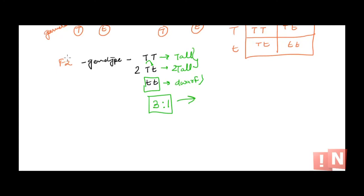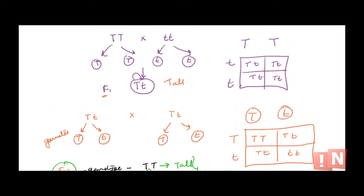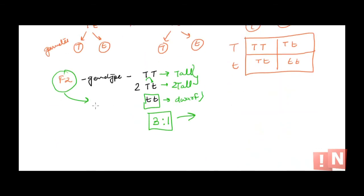This observation — that both parental traits are recovered in the F2 generation — held true not just for height. Mendel experimented with all different kinds of characters, one by one, in monohybrid crosses (one character at a time). He always got this particular ratio, meaning the alleles are getting separated every time the gametes are made. That's how in the F2 generation we are able to observe both parental traits.